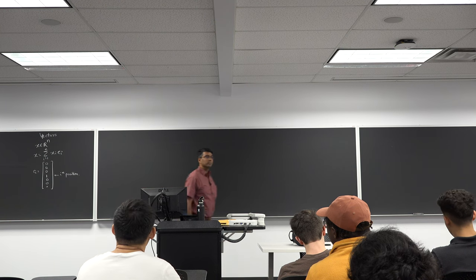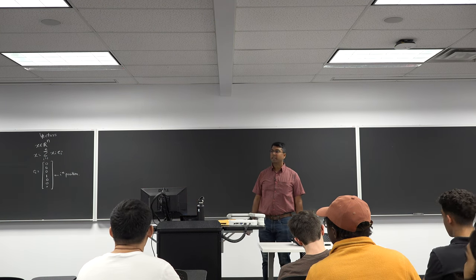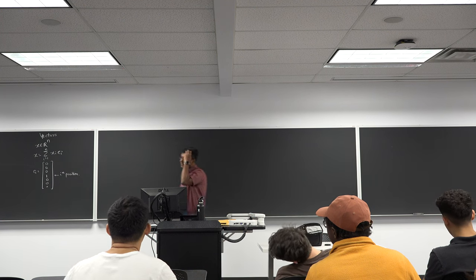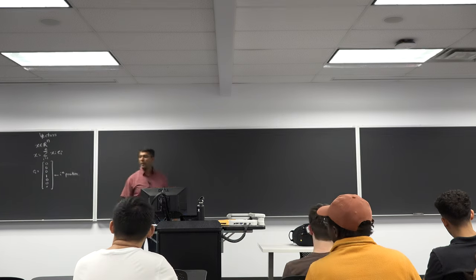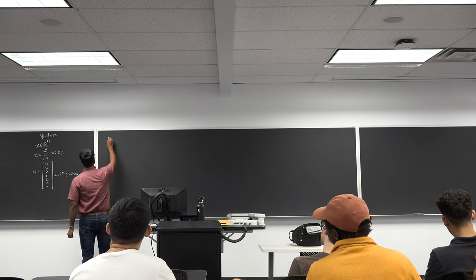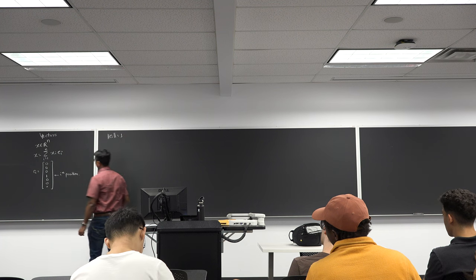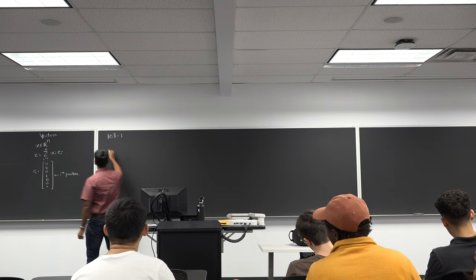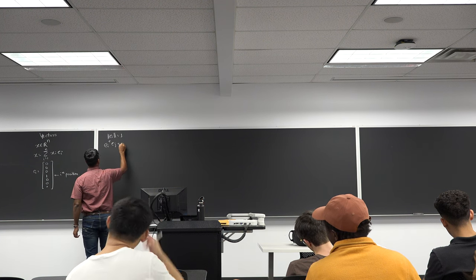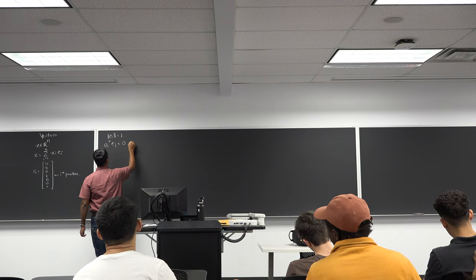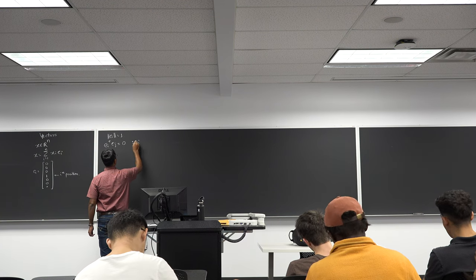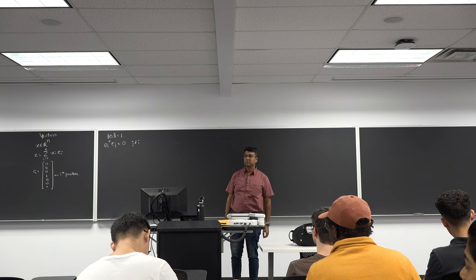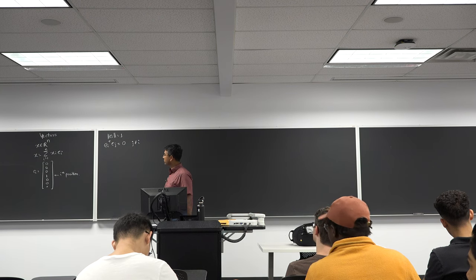What are the key properties of eᵢ, the unit vector in the i-th position? Its norm is one, and it is orthogonal to all other unit vectors. Those are the two most important properties.